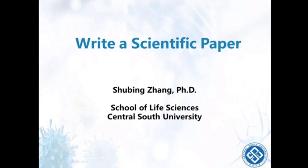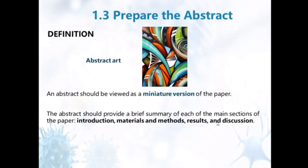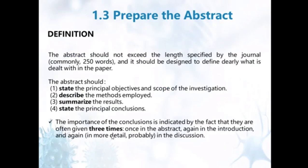Let's start chapter 1, part 3: how to prepare the abstract. From this picture we can see an abstract part — you have to imagine what it looks like. An abstract in a paper should be revealed as a miniature version of the paper. The abstract should provide a brief summary of each of the main sections of the paper, such as introduction, materials and methods, results, and discussion. All these sections should be included in the abstract.